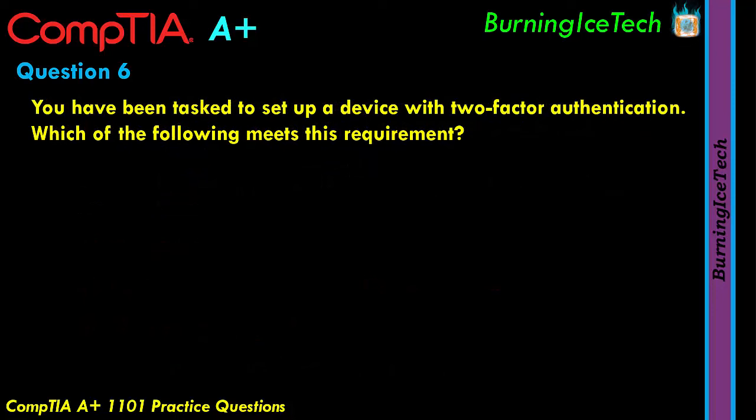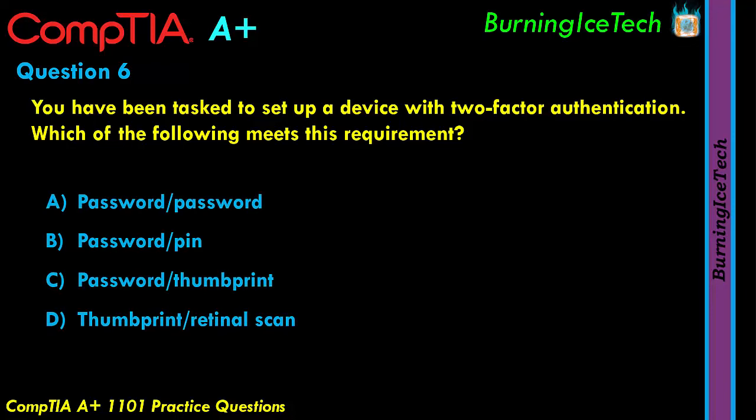Looking at question six. You have been tasked to set up a device with two-factor authentication. Which of the following meets this requirement? Two-factor means you need to prove you are who you claim to be in two different ways from two different categories. The three main categories are: something you know (like a PIN or password), something you have (like a bank card, smart card, or OTP on your cell phone), and something you are (biometric — fingerprint, eye scan, facial recognition, voice recognition).